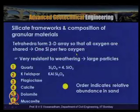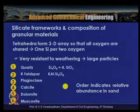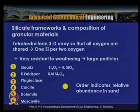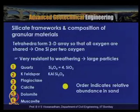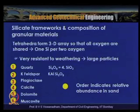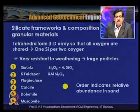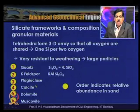In silicate frameworks of granular materials, tetrahedra form a 3D array so that all oxygens are shared, with 1 Si per 2 oxygen anions. They are very resistant to weathering and form large particles. Typical minerals in order of relative abundance in sand are: quartz, K-feldspar, plagioclase, calcite, dolomite, and muscovite.